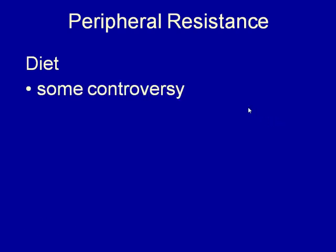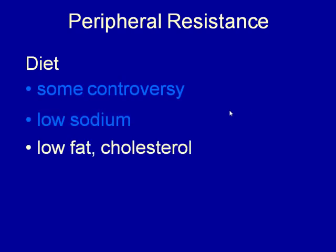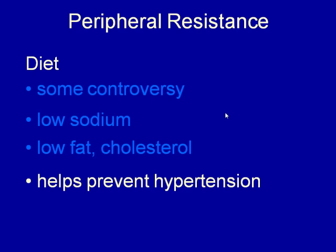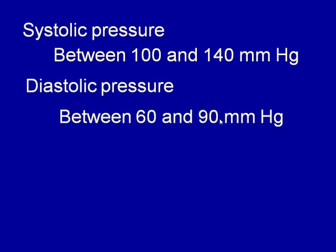Diet may play a role in blood pressure. Diets low in sodium, fat, and cholesterol appear to help with blood pressure and may prevent hypertension. Normal systolic pressure is between 100 and 140 mmHg, diastolic between 60 and 90 mmHg. A typical normal blood pressure is 120 over 80.